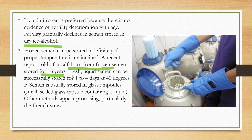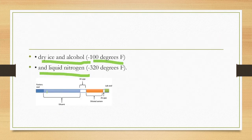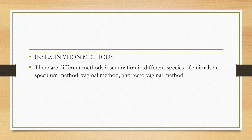Liquid semen can be successfully stored for one to four days at 4 degrees Celsius. Semen is usually stored in glass ampoules — small sealed glass capsules containing liquid. Another promising method is the French straw method, where diluted semen is sealed in a straw with an air gap, then frozen.